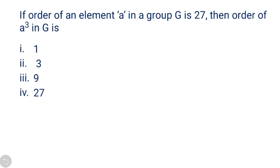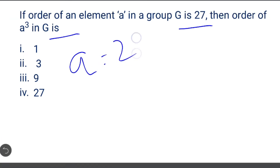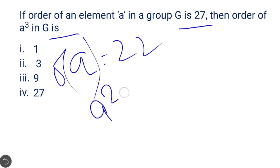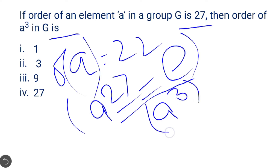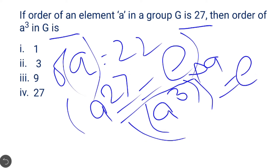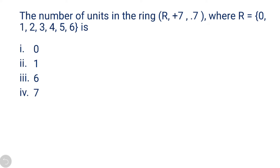Next question: if the order of an element a in a group G is 27, then what is the order of a cubed? If the order of a is 27, that simply means a to the power 27 equals e. From this we can identify that e to the power 3 into 9 equals e, which means the order of a cubed will be 9.